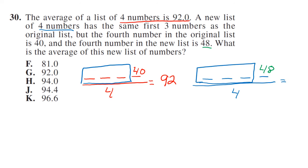So we don't know what these numbers are, so 3x plus 40 divided by 4 equals 92. Multiply both sides by 4 and subtract by 40, or subtract 40, and we get 3x. 3x equals 328.